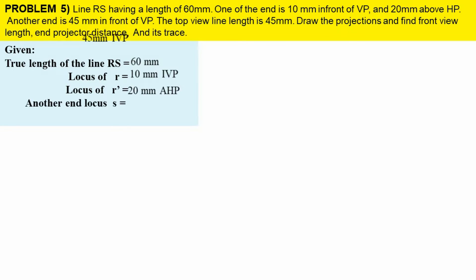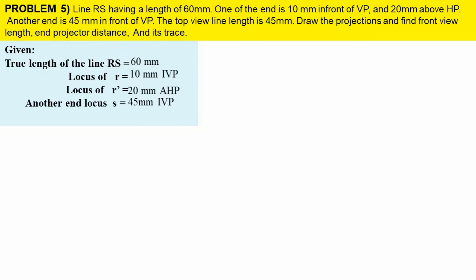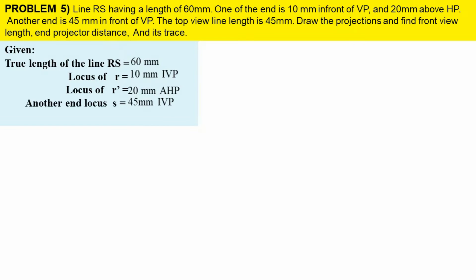That other end is nothing but S. The distance in front — locus of S is equal to 45 mm. And the top view line length is also given, so that is small letter RS = 45 mm.